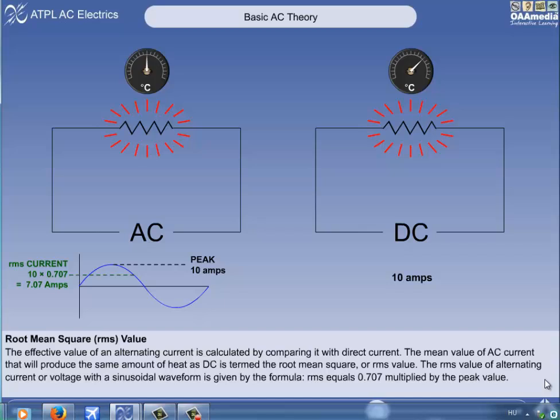In our earlier example, the AC with a peak value of 10 amps has an RMS value of 10 multiplied by 0.707, or 7.07 amps, which explains why it produces less heat than the 10 amp DC current.